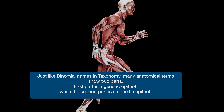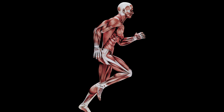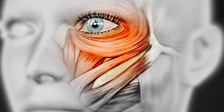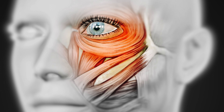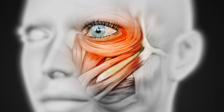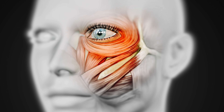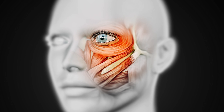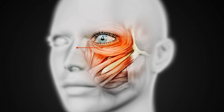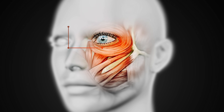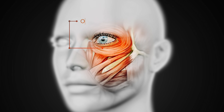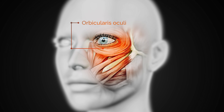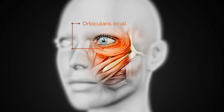Let us go to a specific example: muscles of facial expression, or facial muscles. If you carefully note the name of this muscle, you will find that it has a generic epithet and a specific epithet, just like binomial names of living organisms. Orbicularis means 'in the orbit,' and Oculi means 'that surrounds the eyeball' — oculo means eyeball.